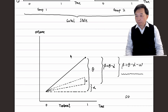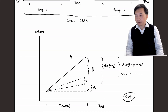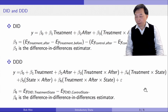In practice, we can check whether Michigan is a valid control state. If we apply the difference-in-differences method to Michigan and find no treatment effect, we consider it a valid control state because it shows that the treatment in Kentucky does not affect the workers in Michigan.